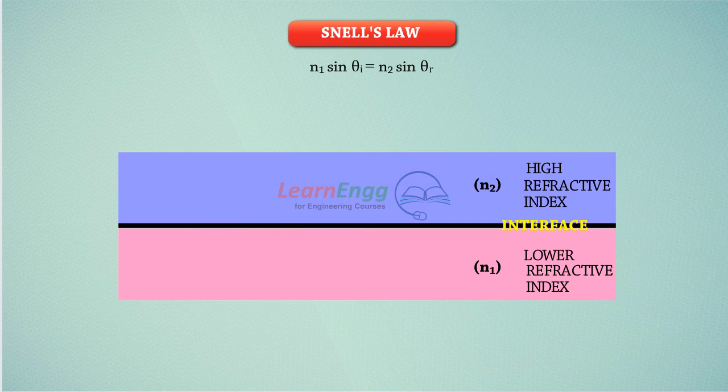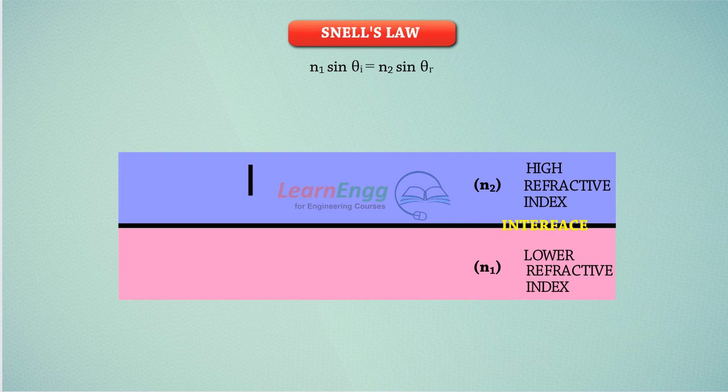Snell's law is used to determine the angle of refraction between two mediums. An imaginary line is perpendicular to the interface. This line is referred to as the normal. A light ray travelling straight into the new medium along the normal changes speed but not direction.